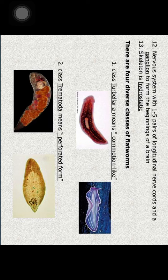There are four diverse classes of flatworms. The unique characteristics are: the body is flat and unsegmented without a cuticle; parenchyma fills the space between the body wall and viscera; protonephridia or flame cells serve as the excretory organ; and there are separate vitelline glands for yolk cell production, while ovaries produce only ova.